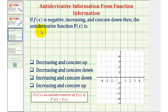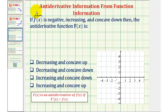Let's begin by reviewing the definition of the antiderivative function. Big F of x is an antiderivative of small f of x if big F prime of x equals small f of x. So notice how here, when we're given information about f of x, we can think of this as information about big F prime of x.